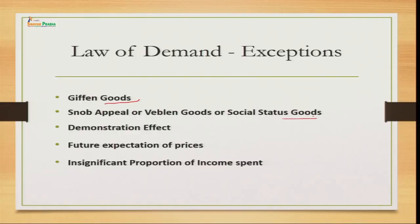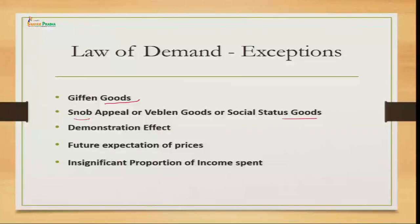The second exception is snob appeal, also called social status goods or Veblen goods. These are goods that people buy to show their social status — like diamond jewelry or antique paintings. People are not considering the law of demand because prices are very high, yet people demand them to represent their status in society. In such cases, the law of demand will not work.